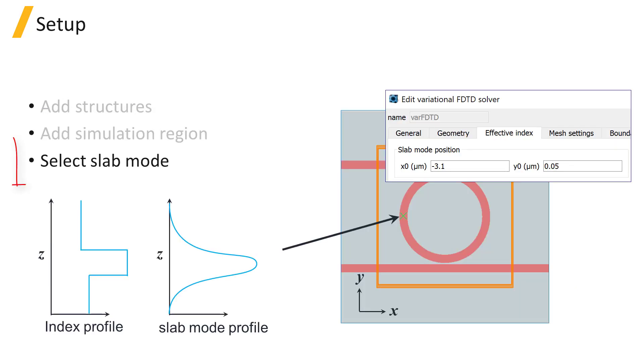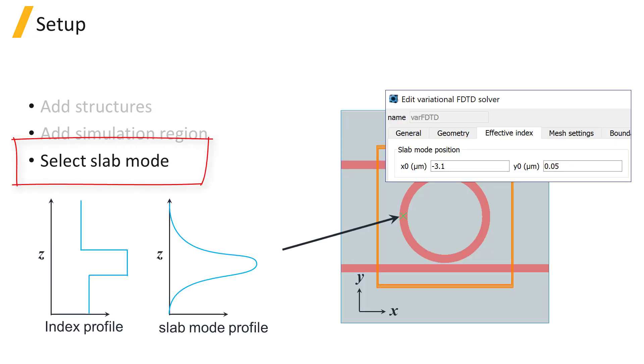Add the solver region where we can select the vertical slab mode of the core waveguide. This slab mode is calculated given the cross section of the device along the Z dimension at the specified XY position.